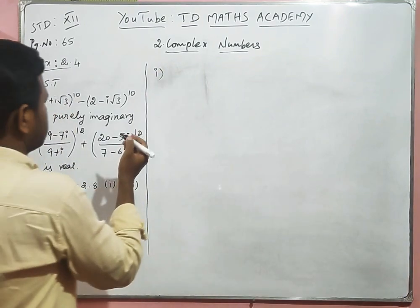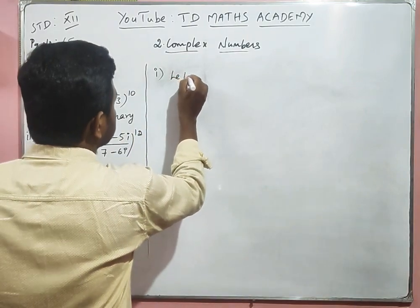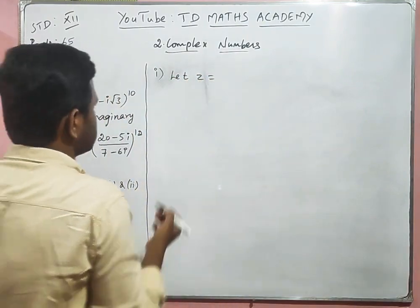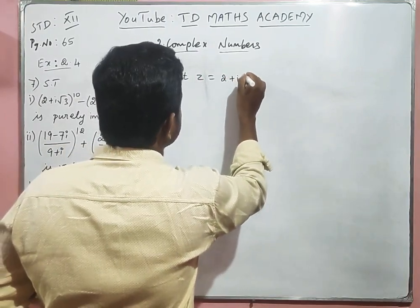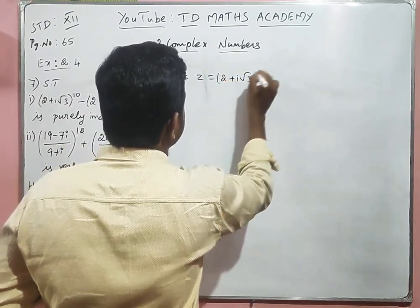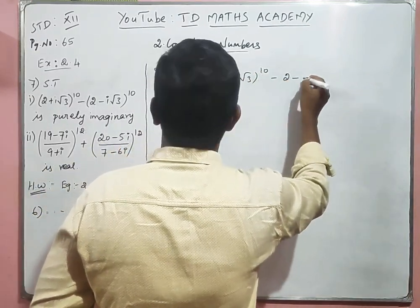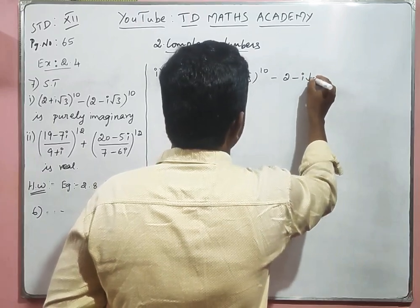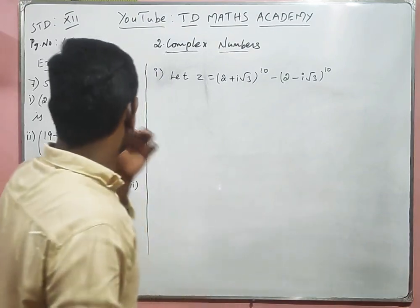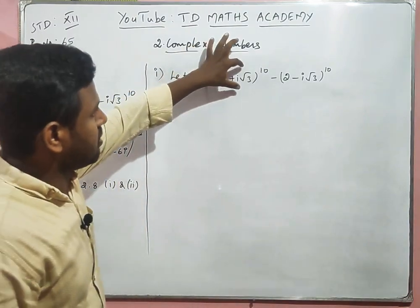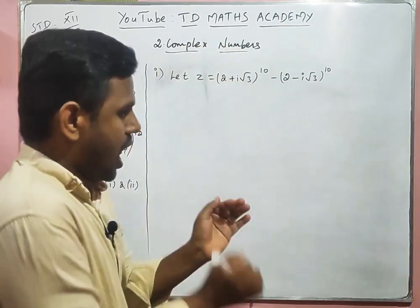Let Z be the overall complex number. Z = (2 + i√3)^10 − (2 − i√3)^10. We need to prove this is purely imaginary, so we have to find the final answer and show it is purely imaginary.